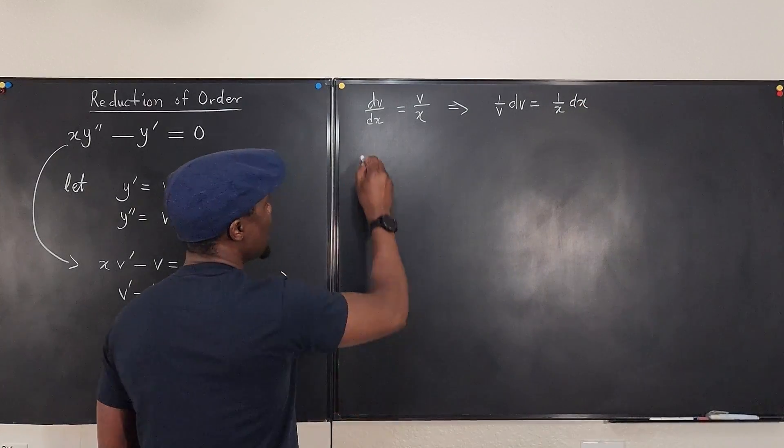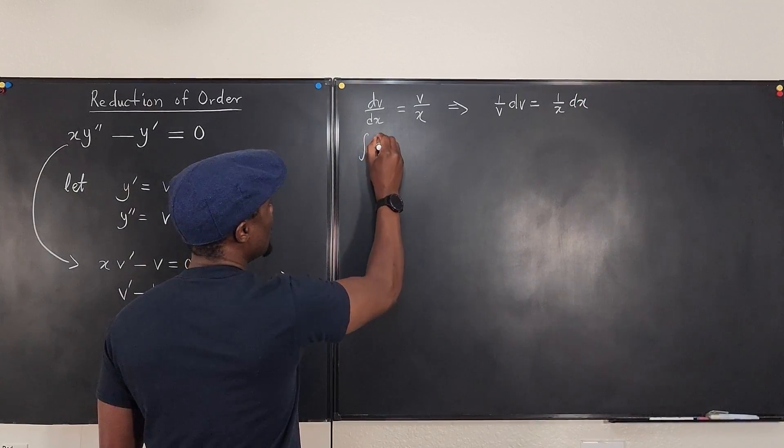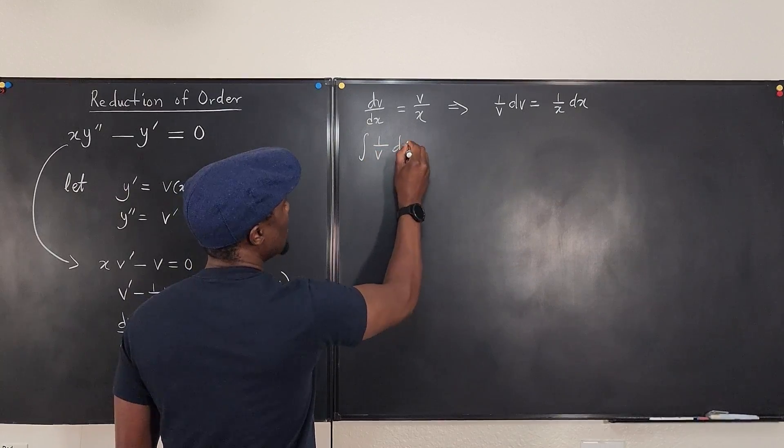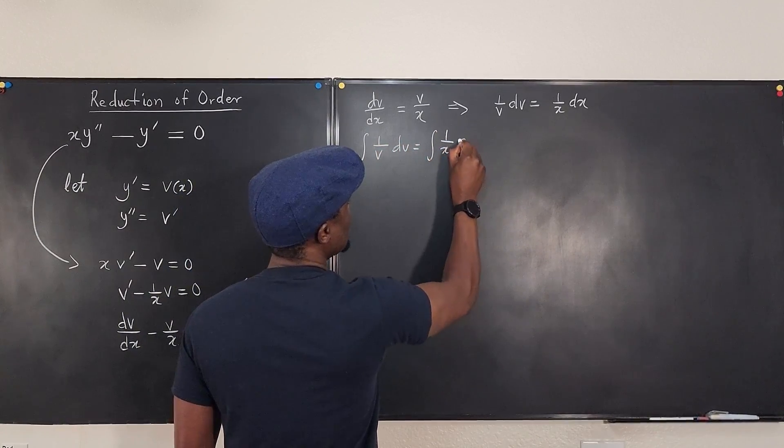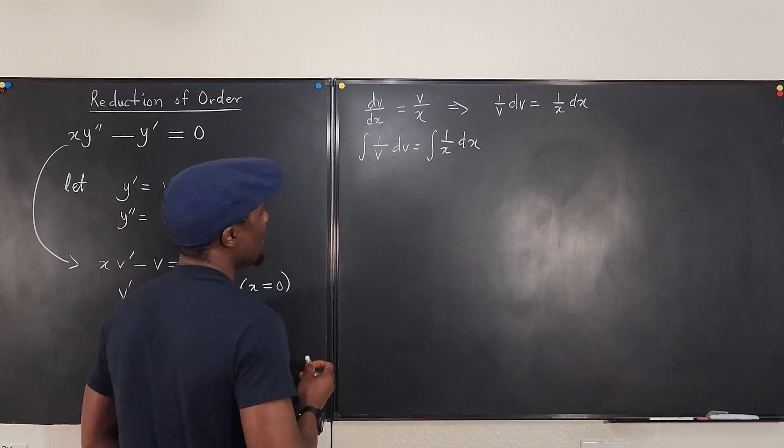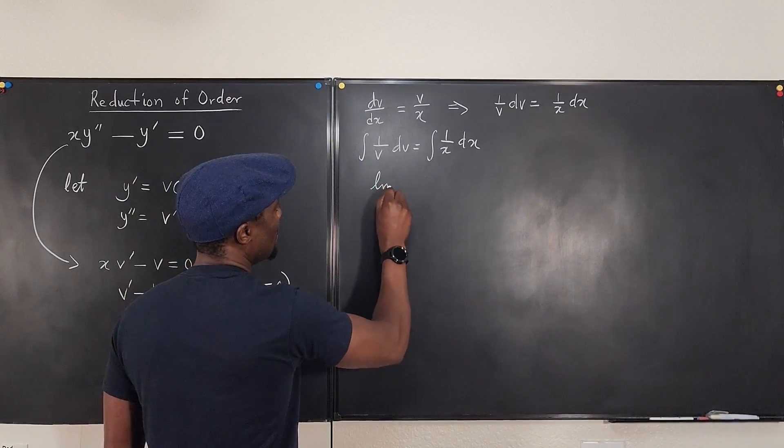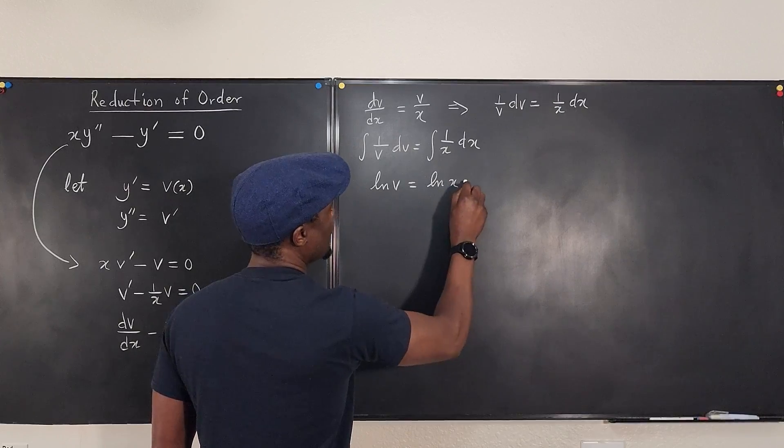So if I integrate both sides, I'm going to have the integral of 1 over v dv will be equal to the integral of 1 over x dx. And what do I get? Here, I get natural log of v is equal to the natural log of x.